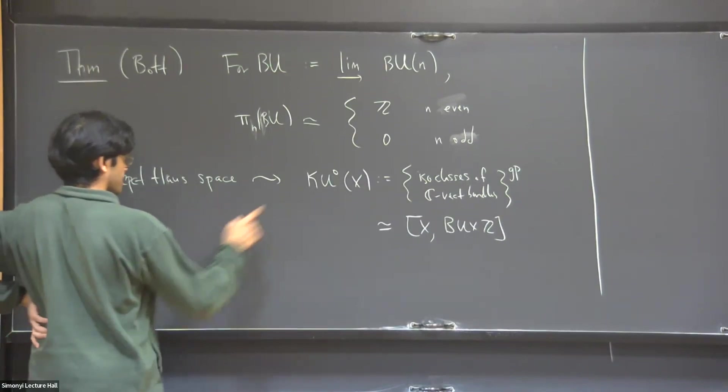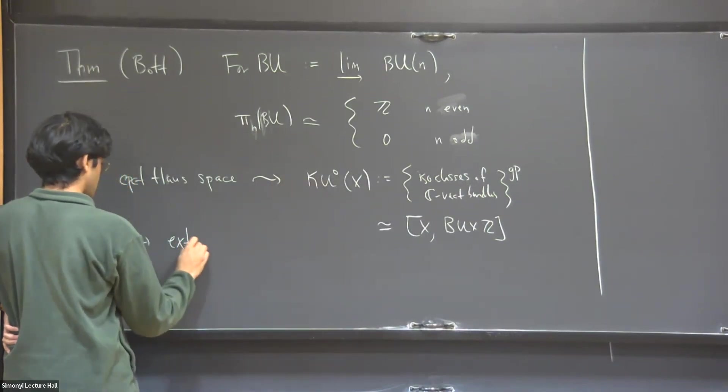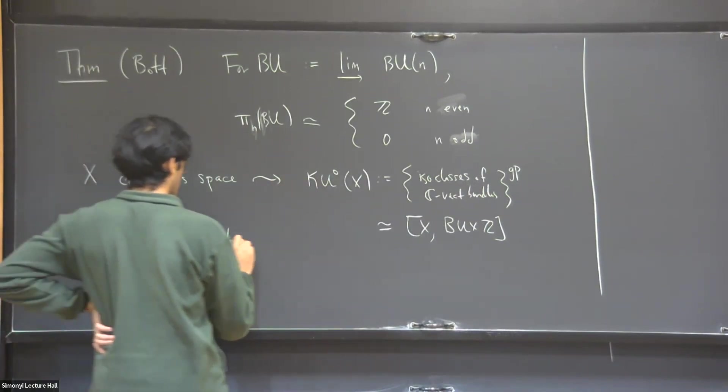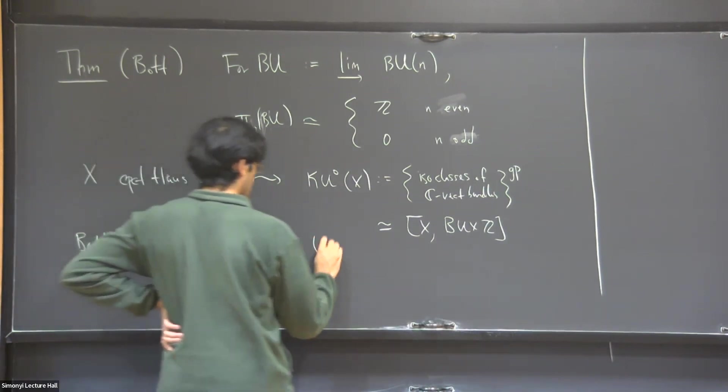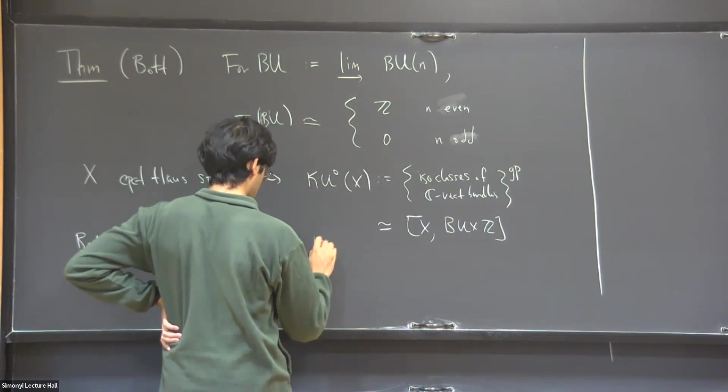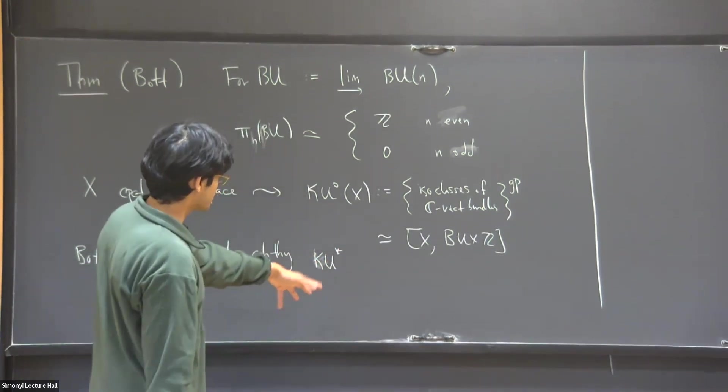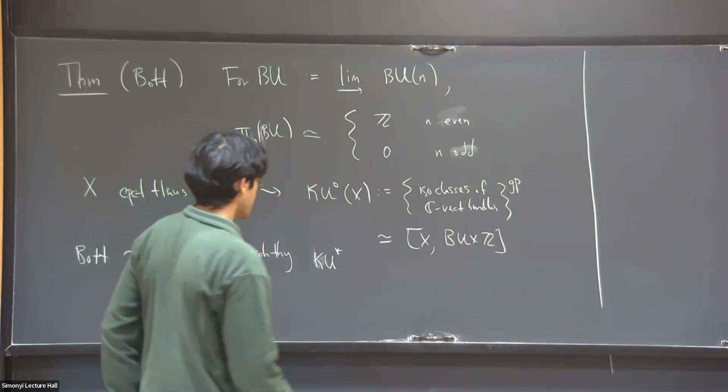This implies that it sends to cohomology, algebraic topology, KU star. So that means it's some invariant which assigns a graded abelian group to every space.